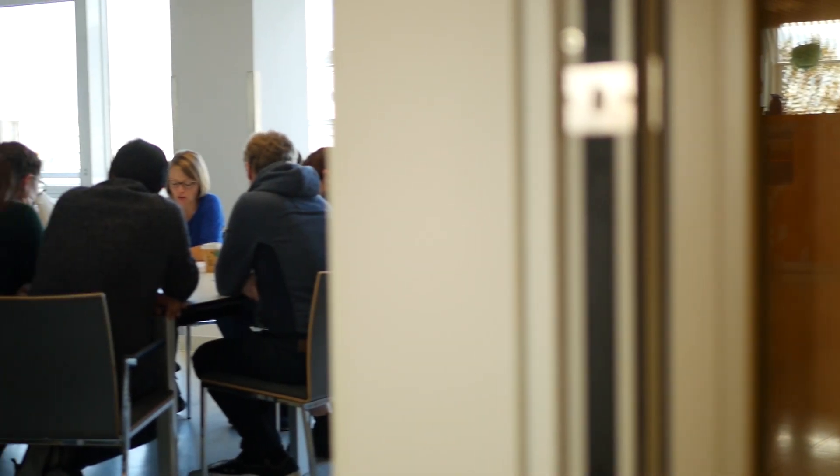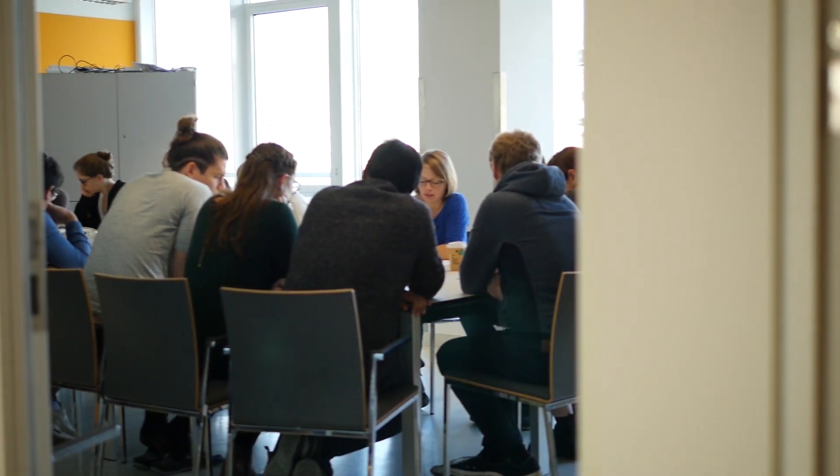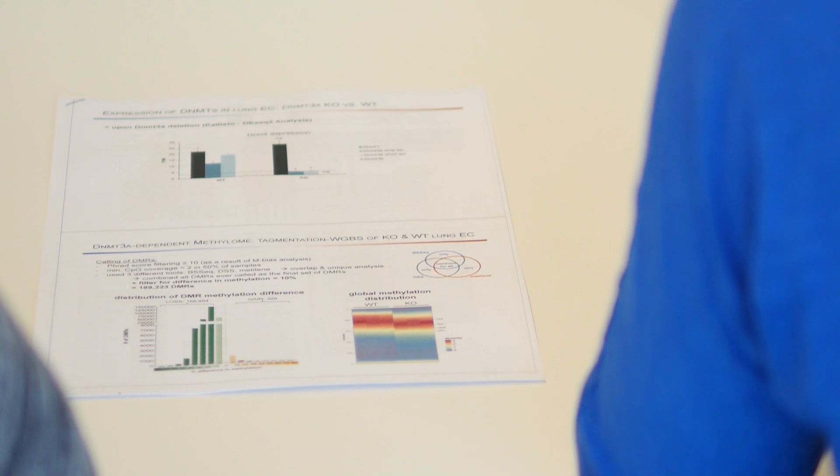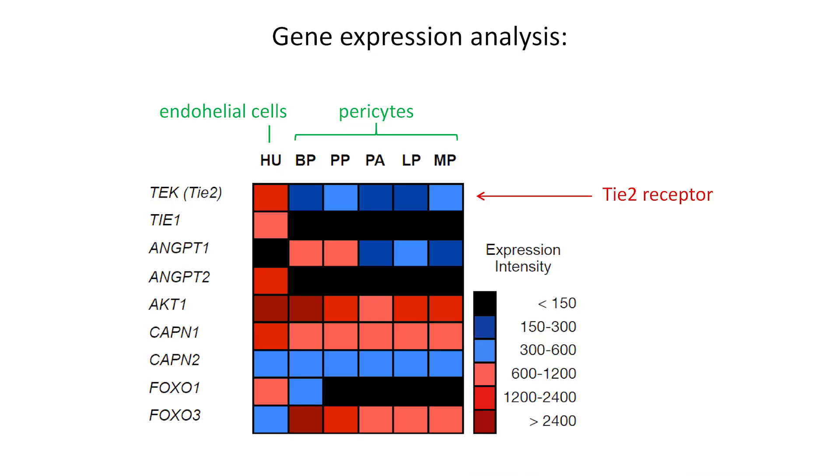The formation of new blood vessels from existing ones, known as angiogenesis, depends on a sequential process that involves both endothelial cells and pericytes. One signaling pathway controlling the association and interaction of blood vessel cells is the angiopoietin-tie signaling. Here, we have identified the receptor molecule T2 on the surface of pericytes that was previously thought to be exclusively on endothelial cells.